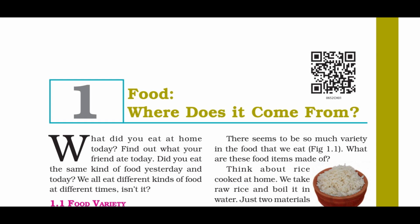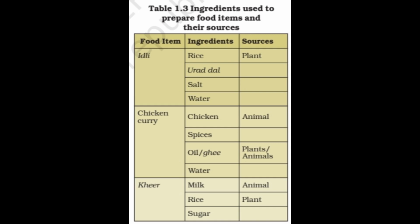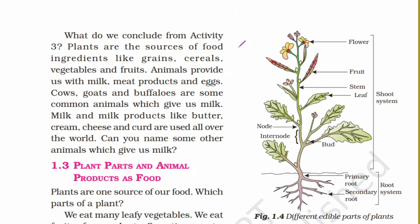Hello students. Today we will continue Chapter 1 of Class 6 Science. In the last video, we discussed about varieties of food and their sources. We concluded that plants are the sources of food ingredients like grains, cereals, vegetables and fruits. And animals provide us milk, meat and eggs.